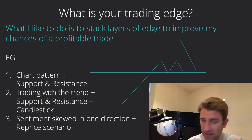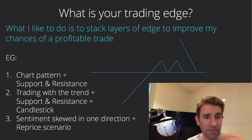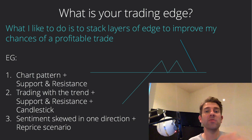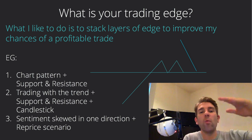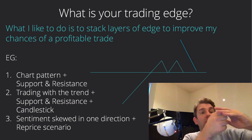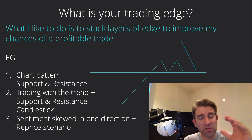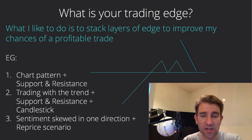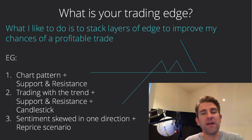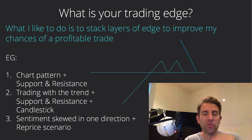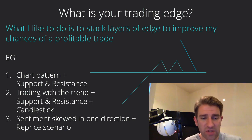If we're looking at that second example — trading with the trend, support and resistance, and a candlestick — let's say we have a candlestick pattern of a wick to the downside. It goes through support, comes straight back up, and we get that kind of reversal wick. I've got some chart examples to show in a second. We're at support, the trend is in our favor — we're stacking the layers of edge together, giving ourselves a much higher chance of success.